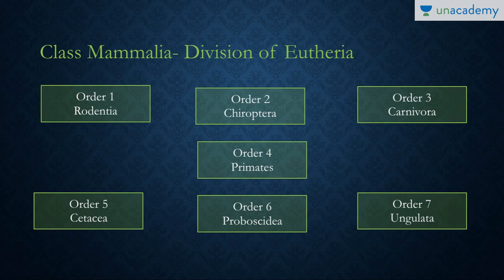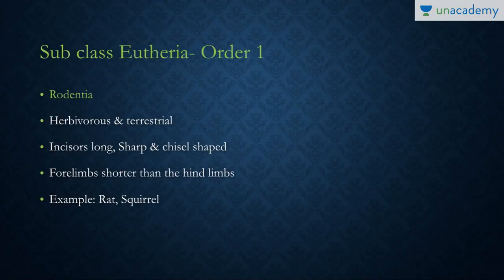The class Mammalia has been divided into various orders. Of all the orders, there are seven important ones: Order 1 Rodentia, Order 2 Chiroptera, Order 3 Carnivora, Order 4 Primates, Order 5 Cetacea, Order 6 Proboscidea, and Order 7 Ungulata.